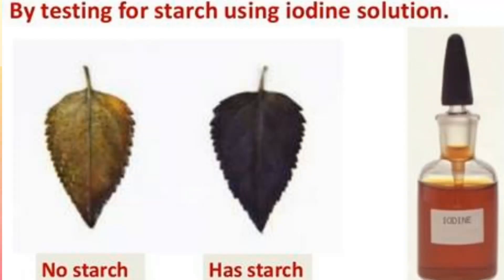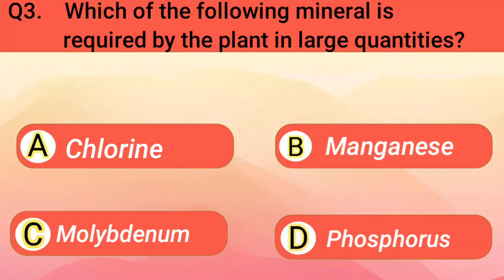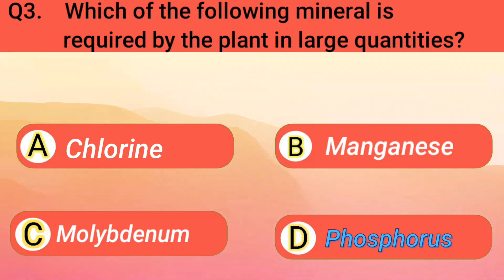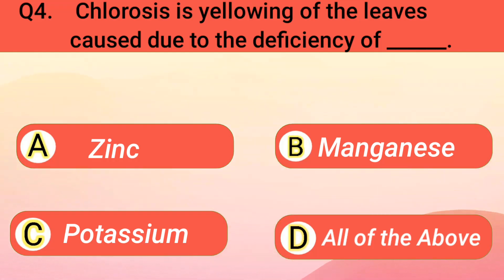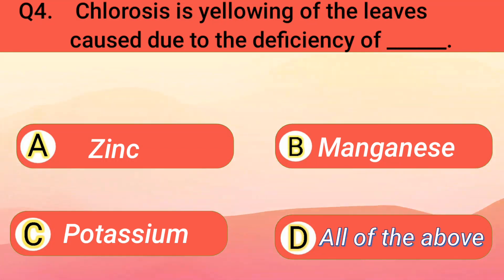Here is a picture of the iodine test in leaves. Which of the following minerals is required by the plant in large quantities? Phosphorus. Chlorosis is the yellowing of the leaves caused due to the deficiency of all of the above.